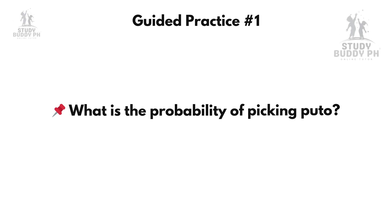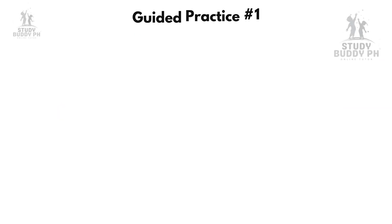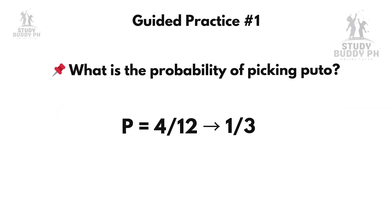What is the probability of picking puto? Correct. P equals 4 out of 12, or one-third. Great job.